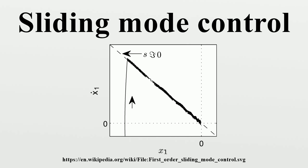Hence, sliding mode control is a variable structure control method. The multiple control structures are designed so that trajectories always move toward an adjacent region with a different control structure, and so the ultimate trajectory will not exist entirely within one control structure. Instead, it will slide along the boundaries of the control structures. The motion of the system as it slides along these boundaries is called a sliding mode, and the geometrical locus consisting of the boundaries is called the sliding surface.